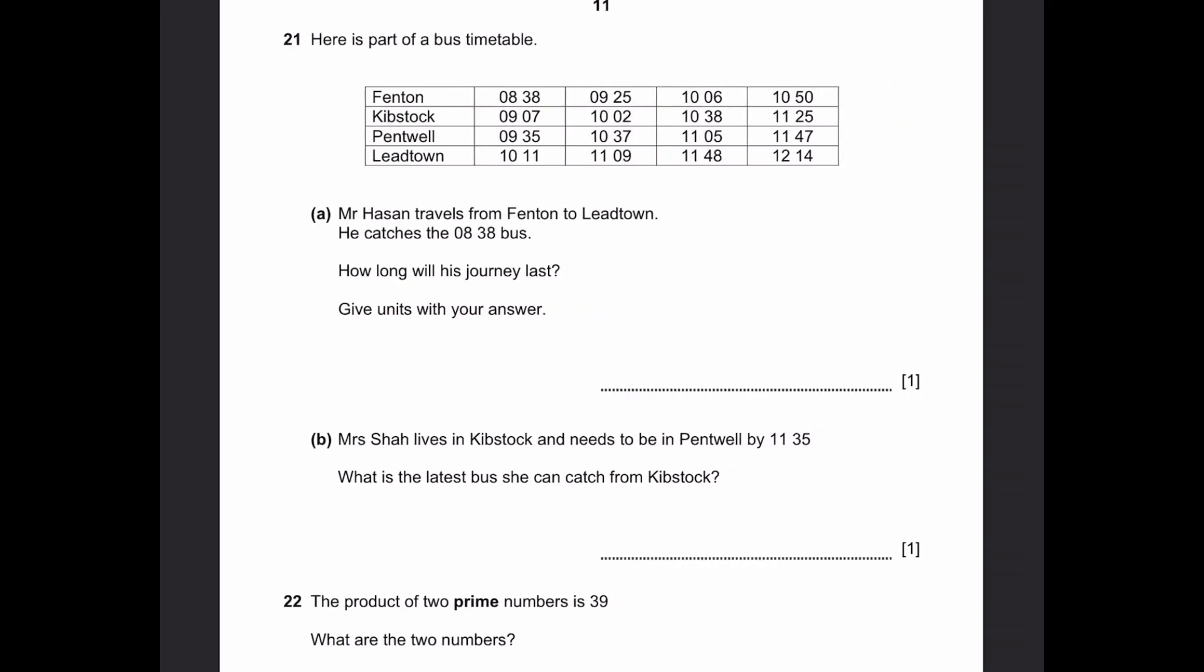Question 21. Here's part of a bus timetable. A. Mr. Hassan travels from Fentown to Leadtown. He catches the 8:38 bus. How long will his journey last? Give units with the answer. It takes from 8:38 to 10:11. We just subtract and we get 33 minutes and 1 hour. So 1 hour, 33 minutes.